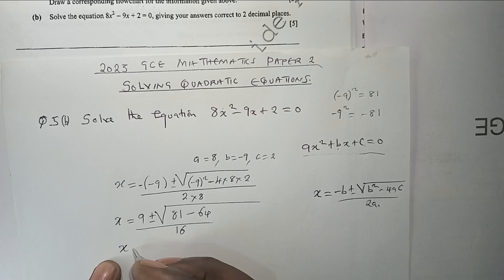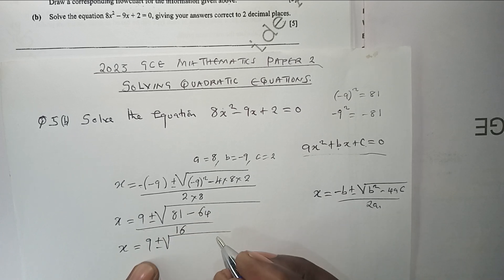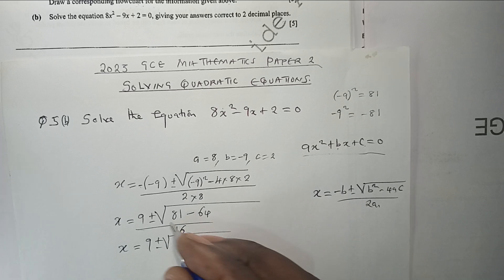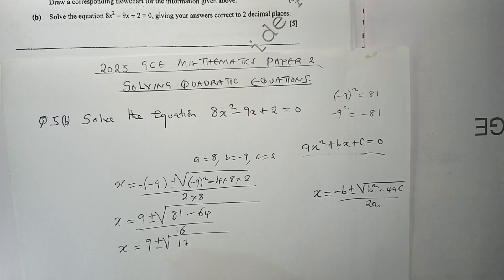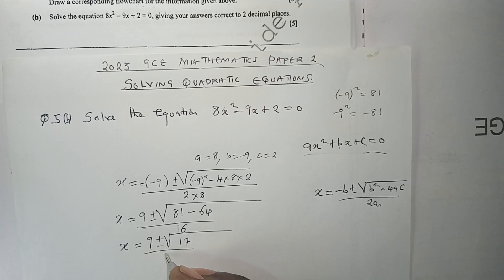We move. x is equal to 9 is going to be maintained. Then positive or negative again is going to be maintained. Then everything shall be over. Now we subtract 64 from 81. This is going to give us 17 over 16.